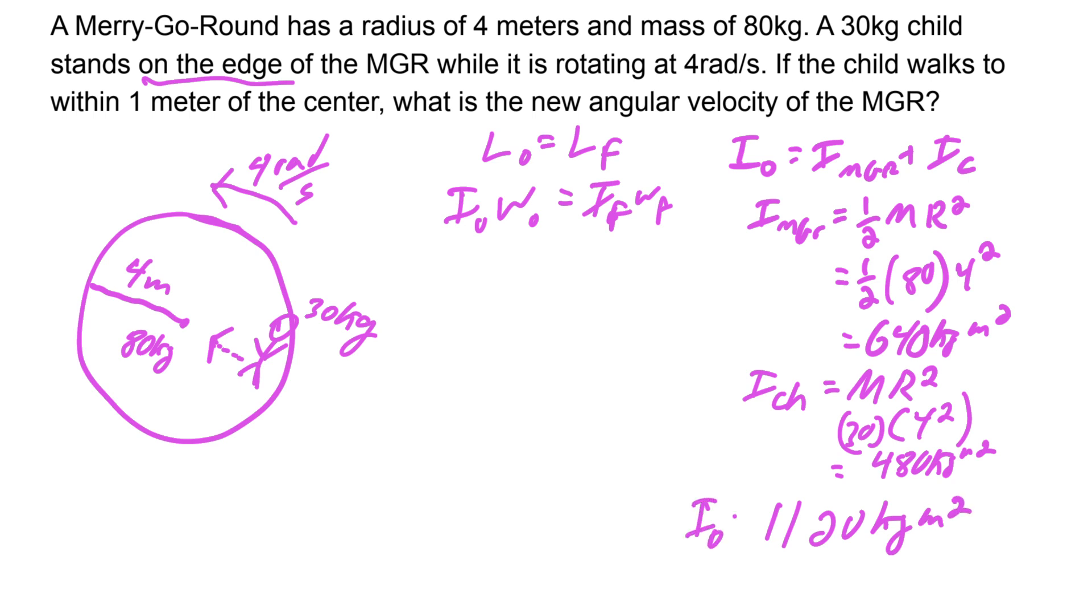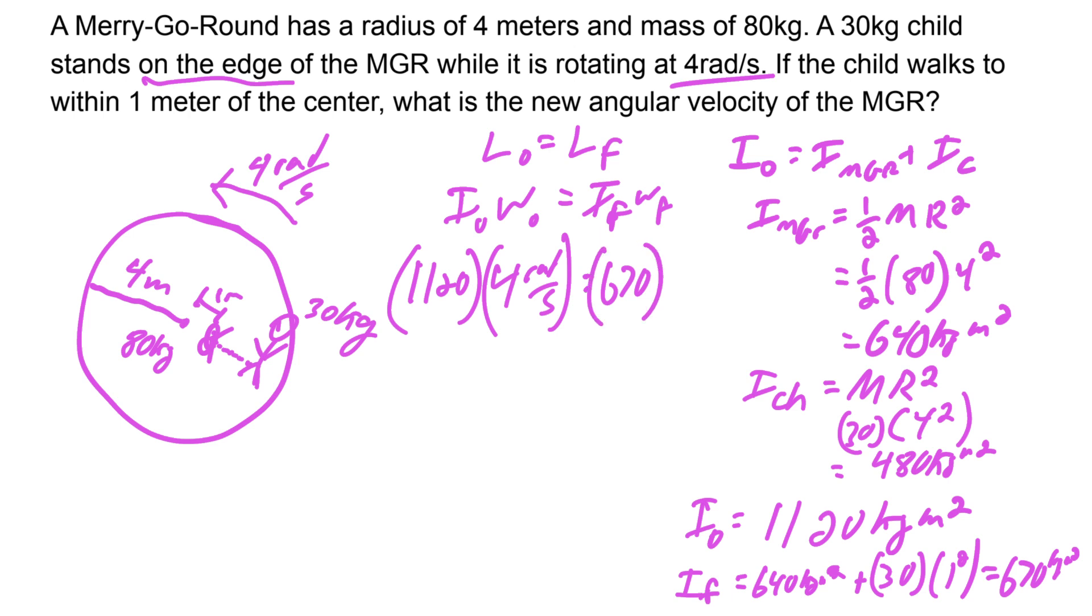I final is going to be the same thing except now the child's closer. That's going to be 640 for the merry-go-round plus 30 times 1 squared since the child's now moving within one meter of the center. That's 640 plus 30, which is 670. At this point, the problem is straightforward. We're going to go 1120 times the initial omega, which was 4 radians per second. I final is 670, and we're looking for omega final. Our omega final is 6.69 radians per second.